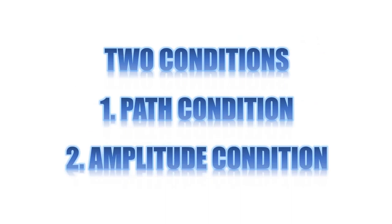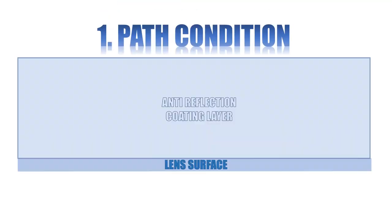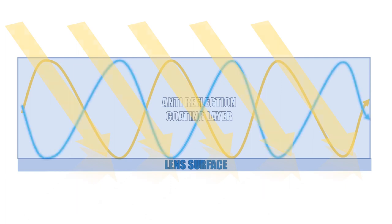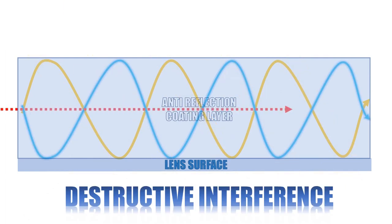The first is the path condition: it refers to the optical thickness of the anti-reflection coating layer. The light waves reflect from the coating and the lens surfaces to cause destructive interference, which ultimately reduces reflections. The idea is that a thin film creates a double interface, giving you two reflected waves.